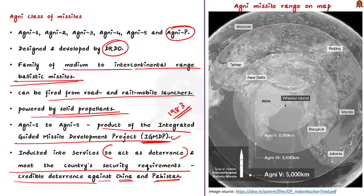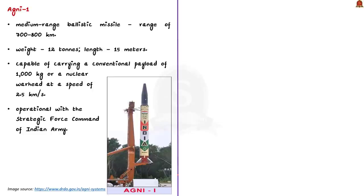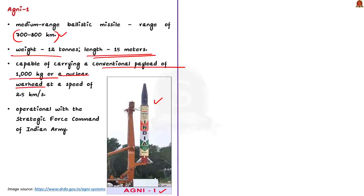Let us now see about each missile in brief. Agni 1 is a medium-range ballistic missile with a range of 700 to 800 kilometers. It weighs 12 tons and is 15 meters in length. Agni 1 is capable of carrying a conventional payload of 1,000 kg and can also carry a nuclear warhead. It travels at a speed of 2.5 kilometers per second. Agni 1 missiles are operational with the Strategic Force Command, SFC, of the Indian Army.